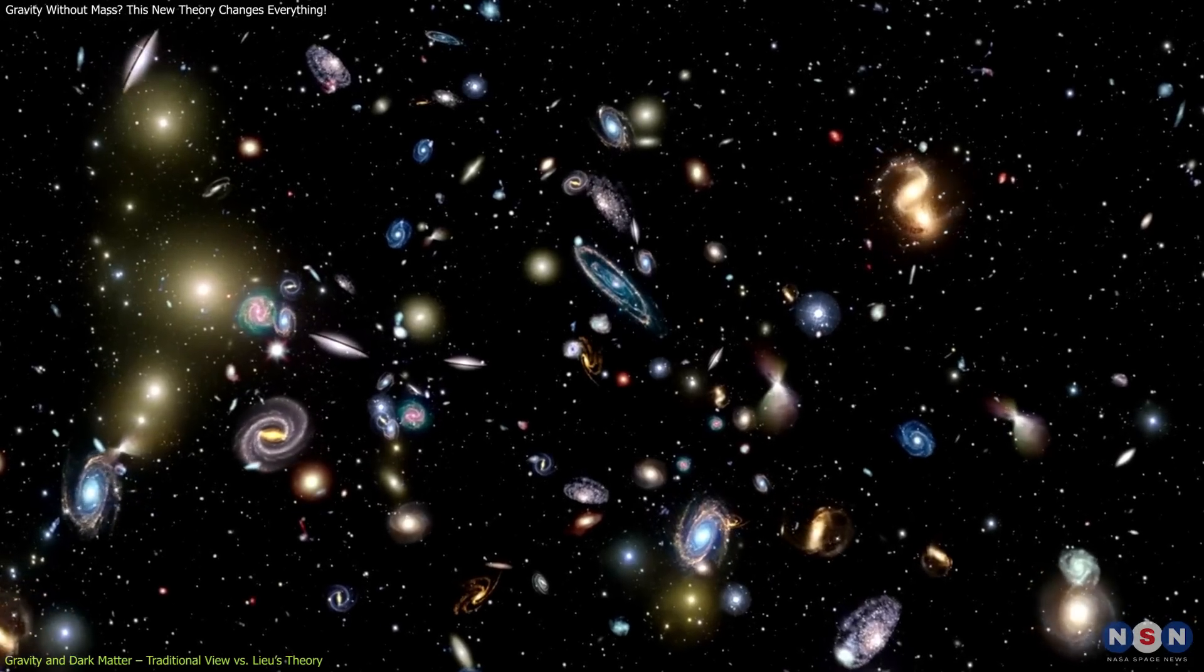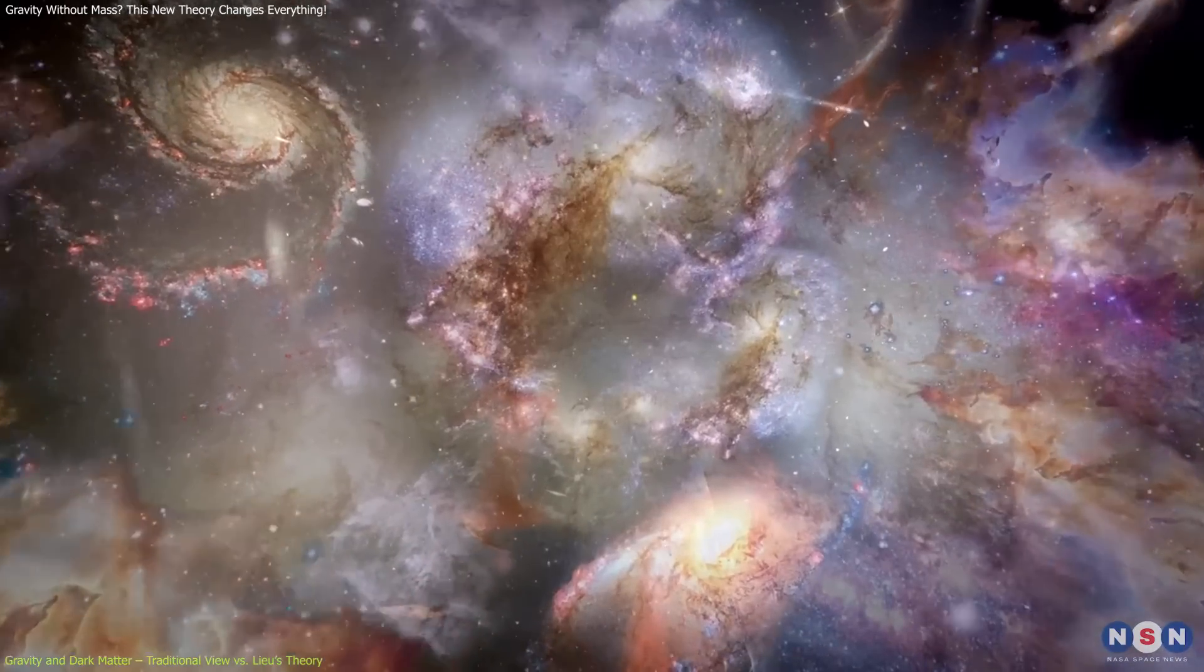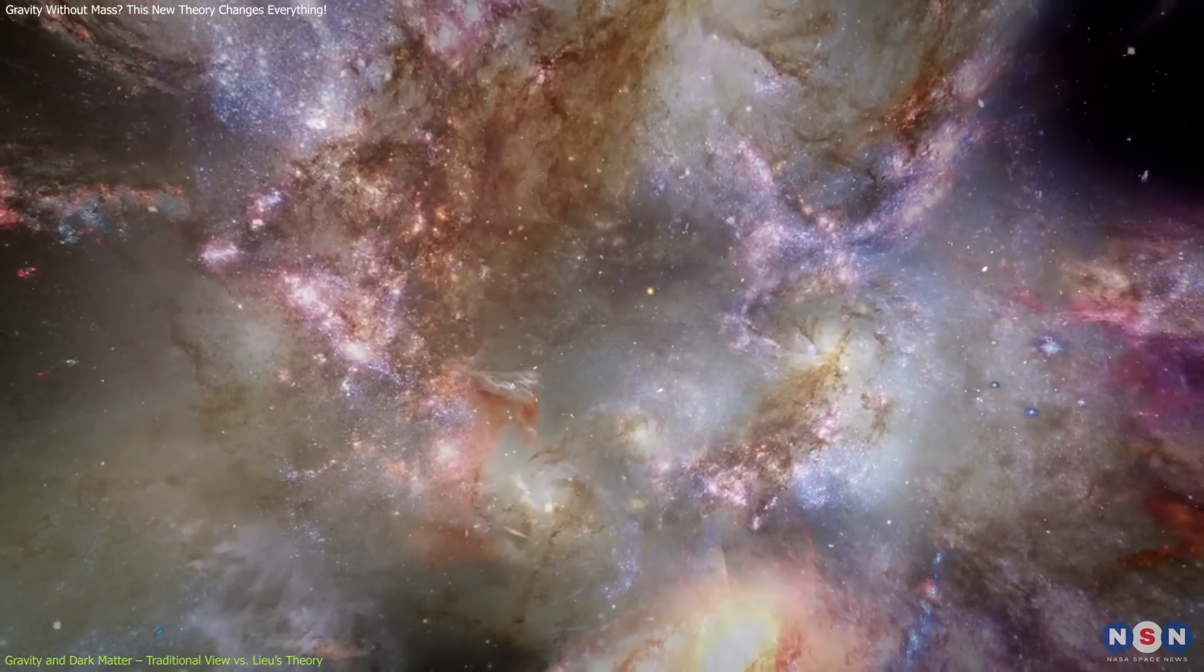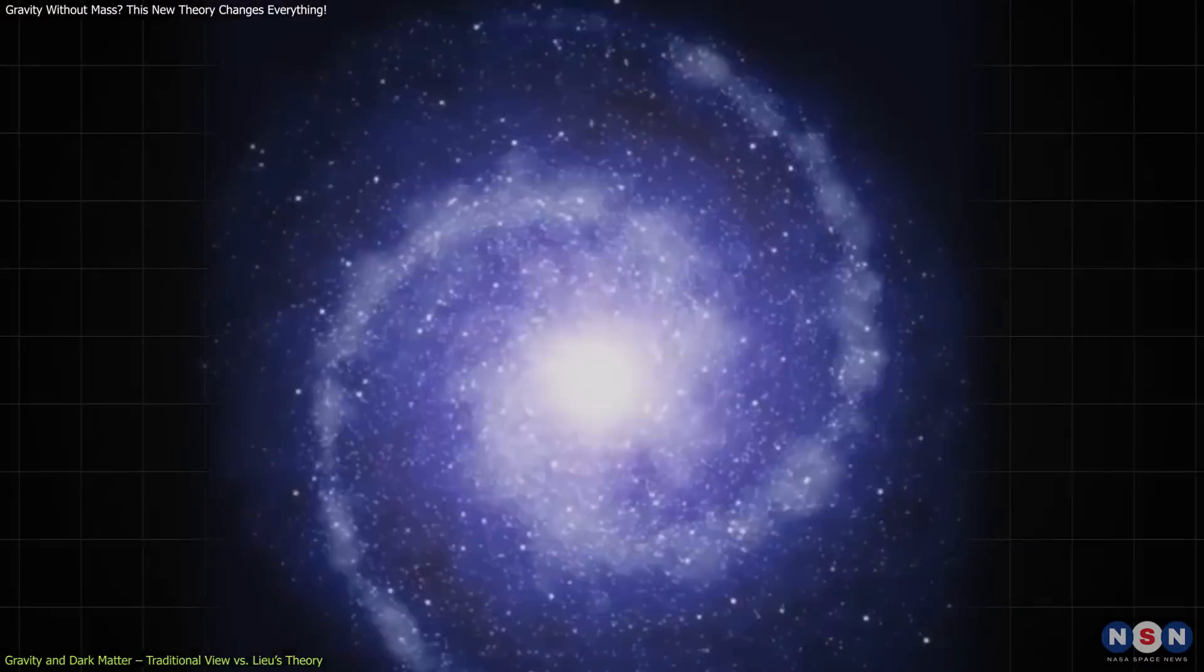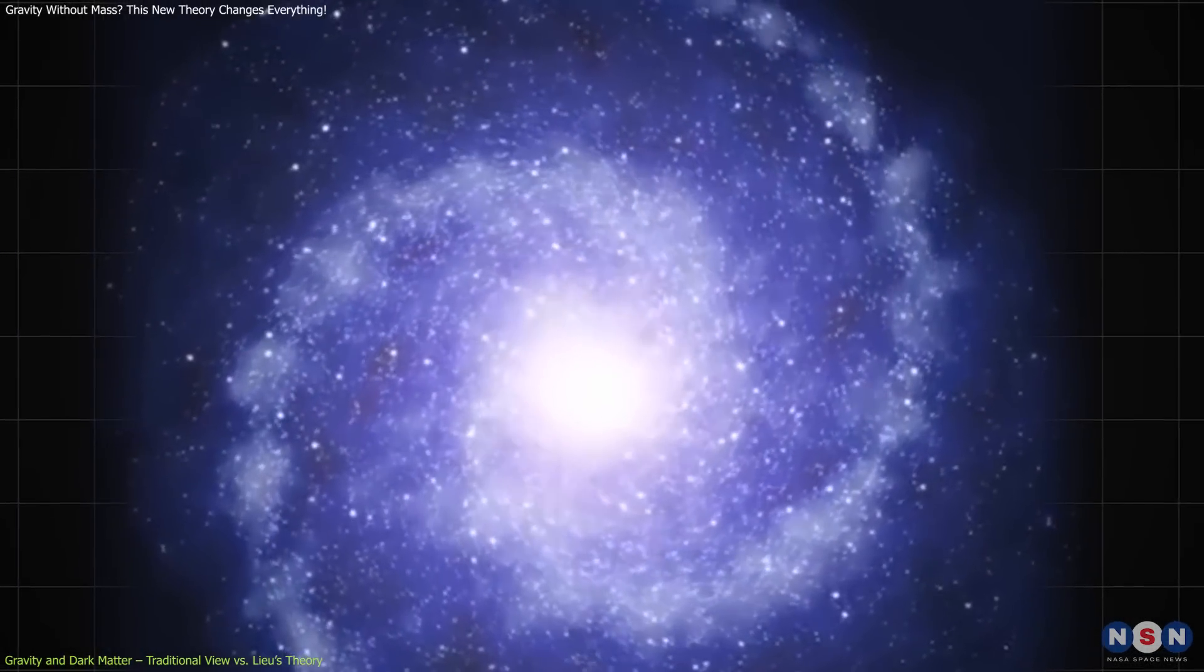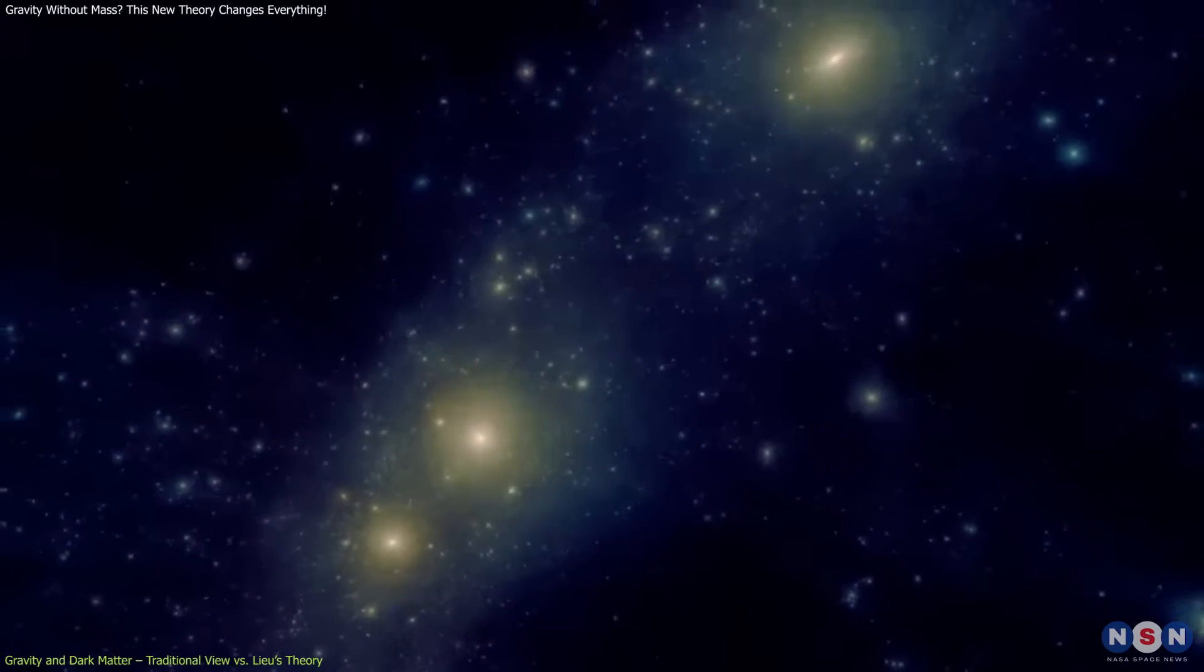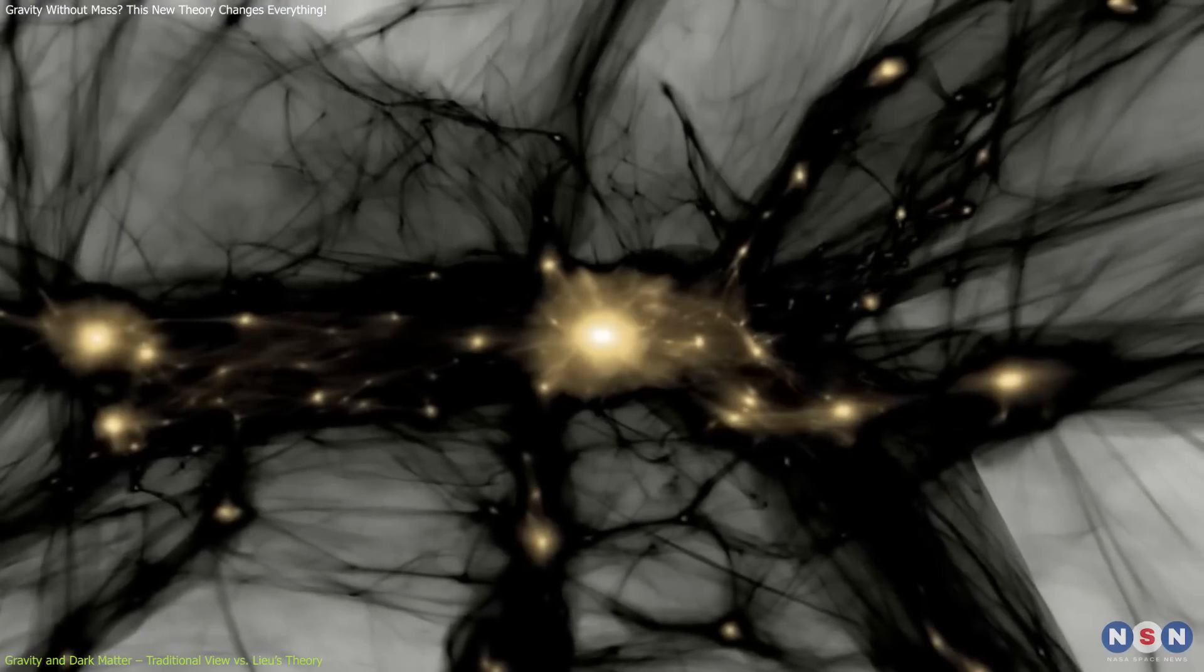However, observations of galaxies and galaxy clusters have revealed gravitational effects that cannot be explained by visible mass alone. Stars at the edges of galaxies rotate at speeds that, according to Newtonian mechanics, should cause them to fly apart. To account for this discrepancy, scientists propose the existence of dark matter, an invisible substance that exerts gravitational force holding galaxies together.